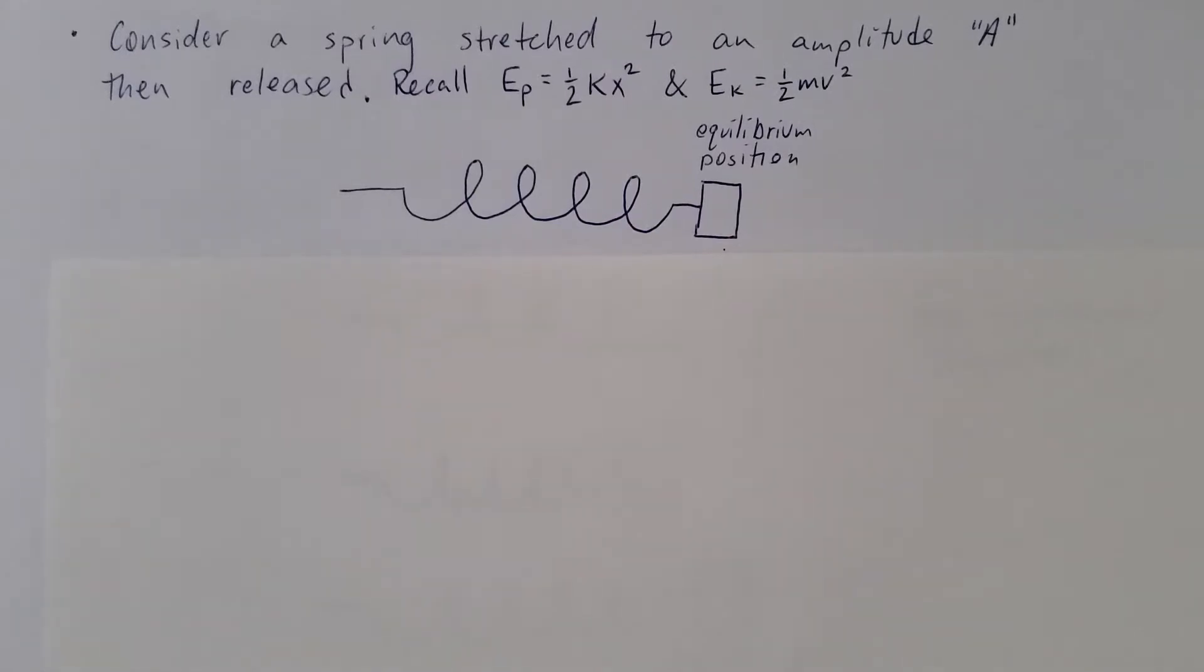I want us to consider a spring stretched to an amplitude. Amplitude means maximum displacement. So I've drawn a spring here. This is where it is at the equilibrium position, and we're going to stretch it out to an amplitude. I'll label that.